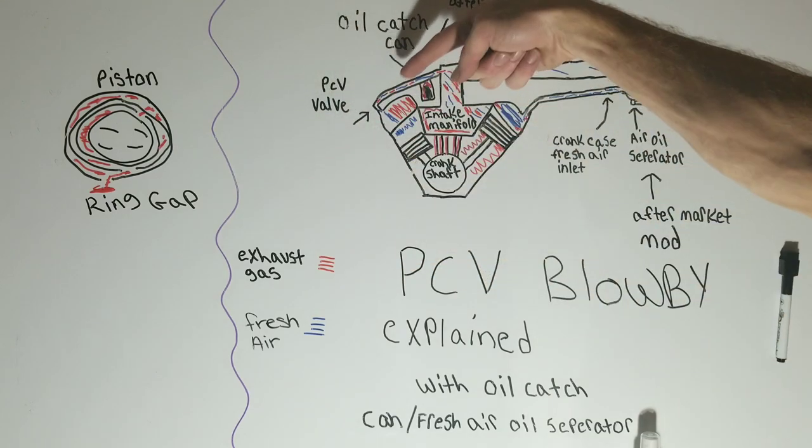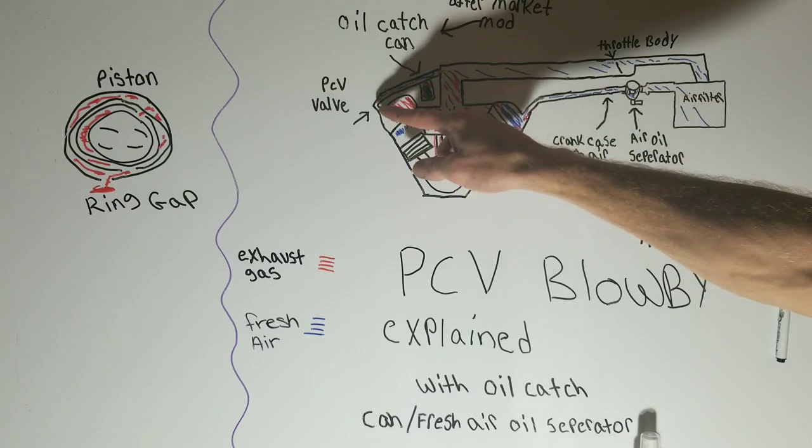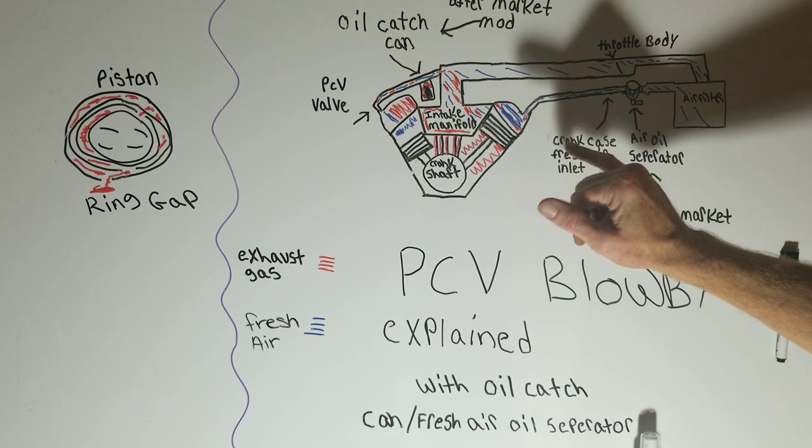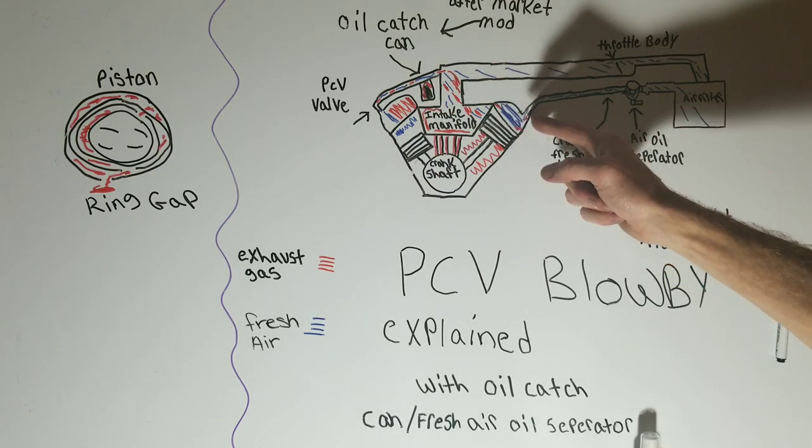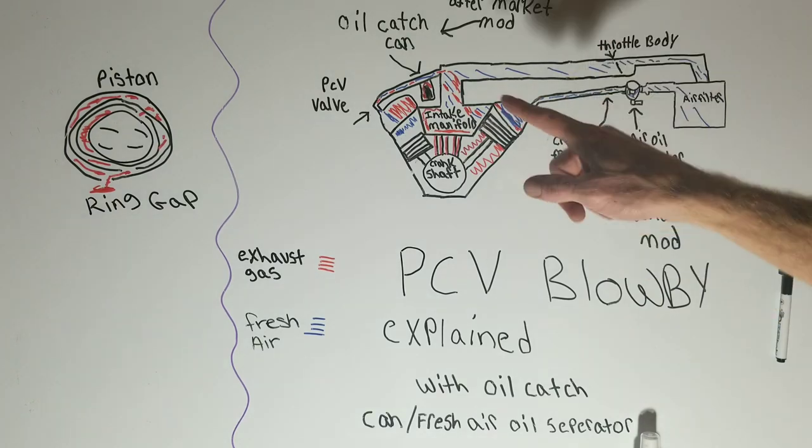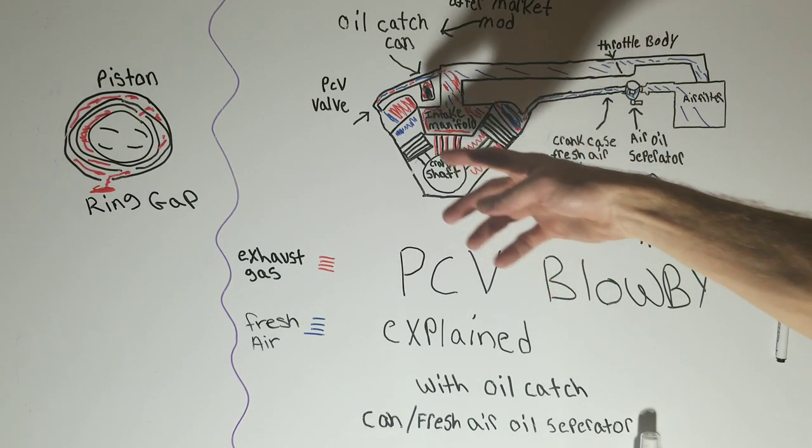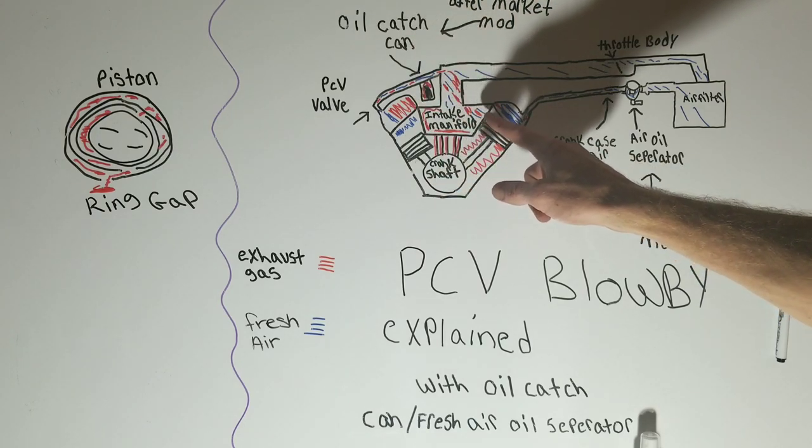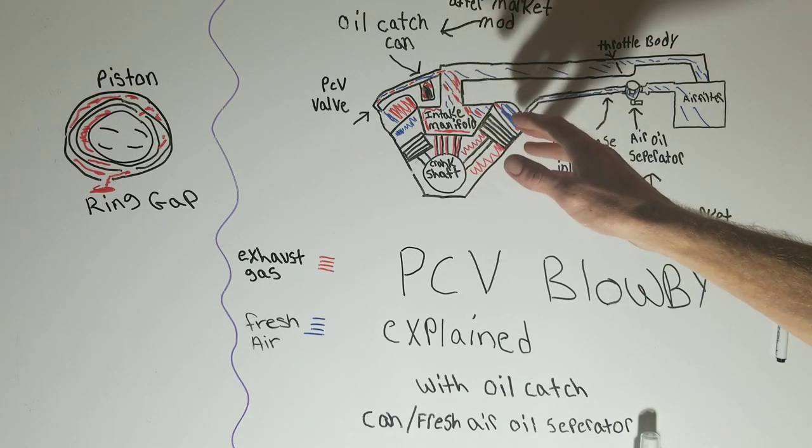So first it would enter the valve cover after it passes through the oil drain holes. It'll go into the valve cover, into the PCV valve which is located on the valve cover. See right here you have your PCV valve and then the other hose, fresh air inlet, separate hose. Once it passes through the PCV valve it moves on to the intake manifold, passing into the intake manifold then into the combustion chamber where it is burned off and repeated.